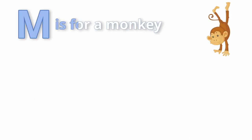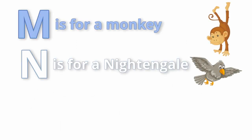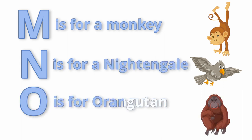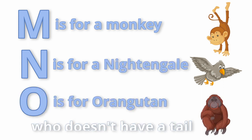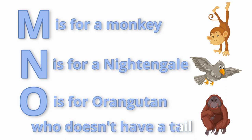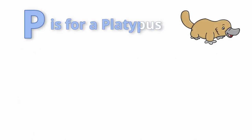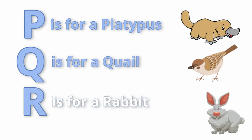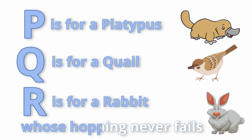M is for a monkey. N is for a nightingale. O is for an orangutan who doesn't have a tail. P is for a platypus. Q is for a quail. R is for a rabbit whose hopping never fails.